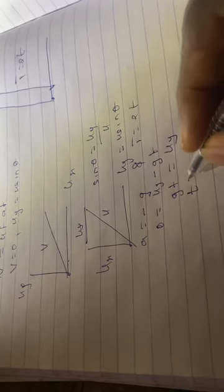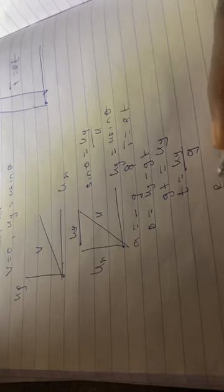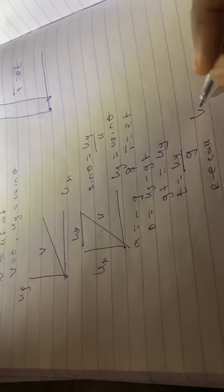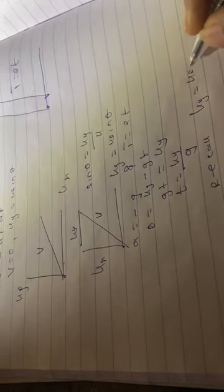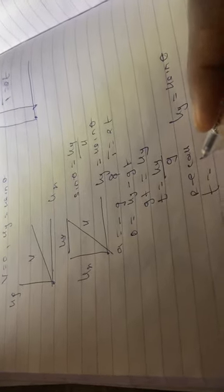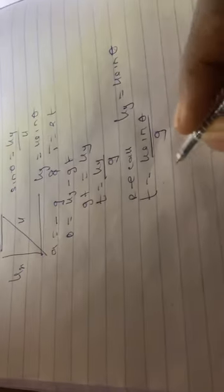Since u_y = u sine theta, t = u sine theta / g. The time of flight is twice t.